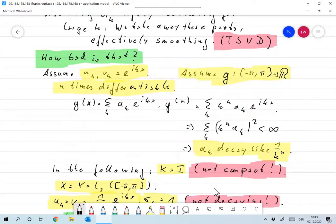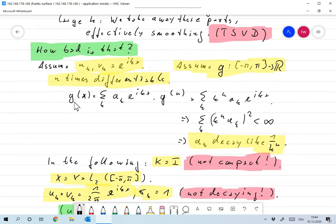Let's assume that g is a function from minus pi to pi to R. Let's for a second assume that the singular vectors are actually the Fourier modes, so uk and vk are e to the i kx. Let's further assume that g is n times differentiable. First we can express g as a Fourier series with the known coefficient functions. G of x is sum over all k, Fourier coefficients a k times e to the i kx.